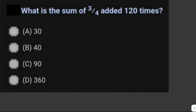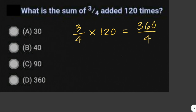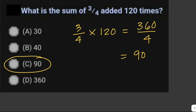What is the sum of three-fourths added 120 times? We just multiply three-fourths by 120: (3/4) × 120 = 360 ÷ 4 = 90. The answer is letter C.